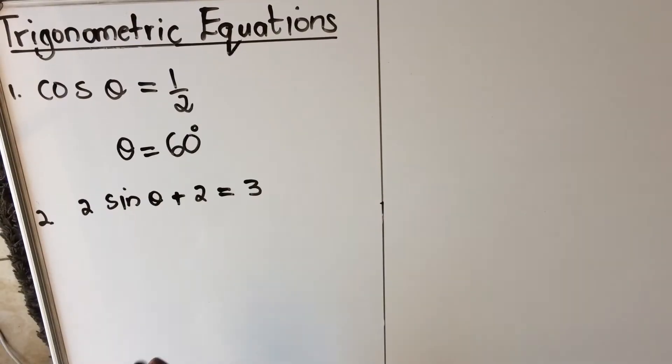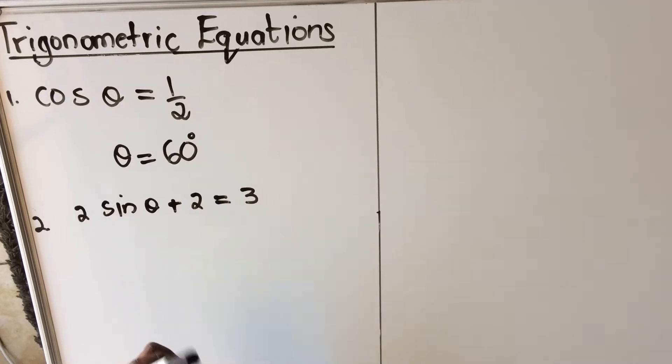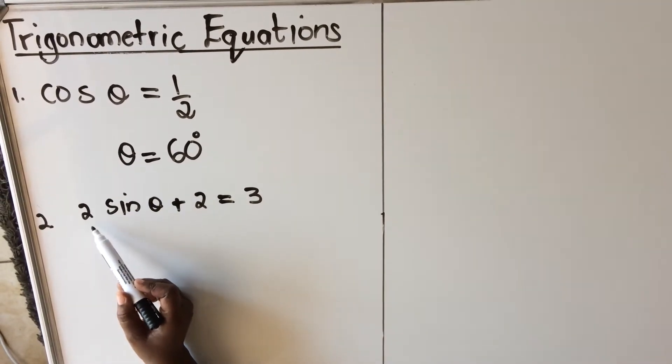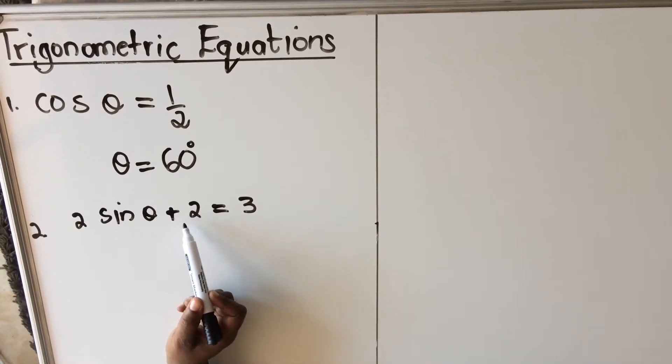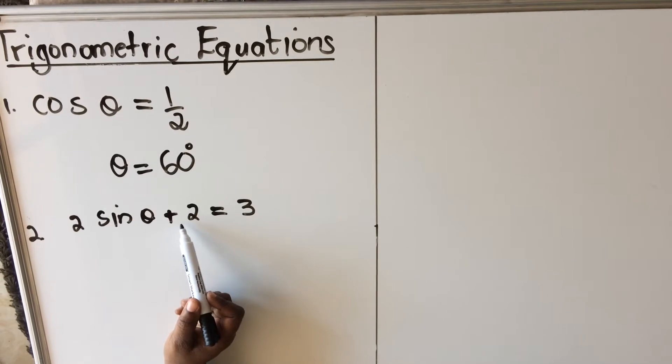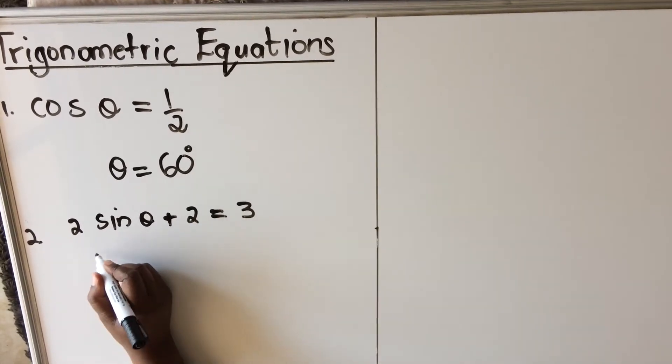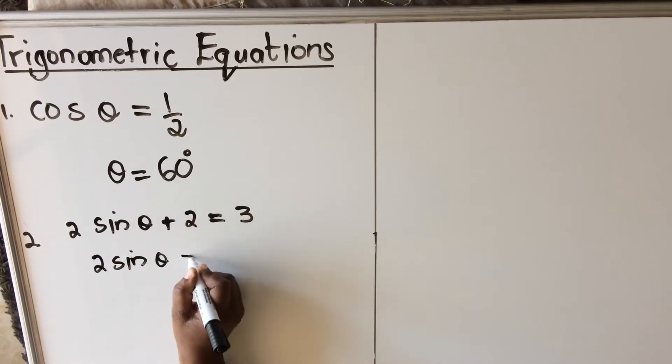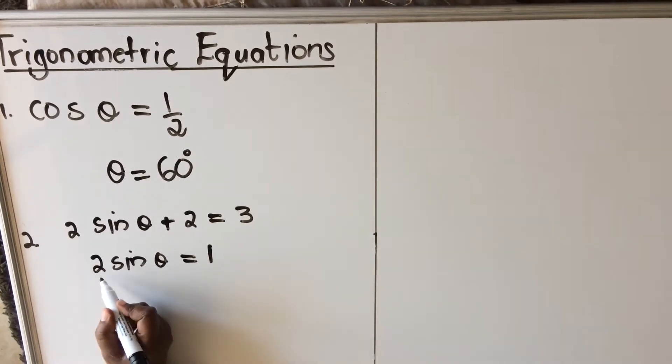Okay, with the second one, the catch with trigonometric equations is you need to leave the trig ratio all by itself. When you look at here, you're multiplying it by two and adding two. You're going to take the plus two first, subtract by two from both sides, so you have 2 sin theta equals three minus two, which is one.